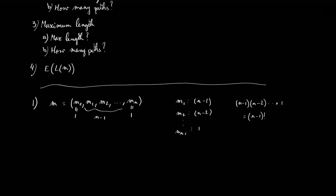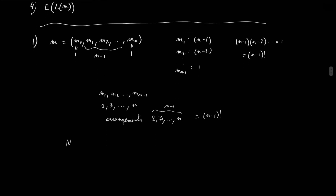Another way to think about it is that the houses m1, m2, etc., up to mn-1 must be the numbers 2, 3, etc., up to n — the number associated to each house. The number of different paths is the number of arrangements of the numbers 2, 3, etc., up to n. The number of arrangements of n-1 numbers is exactly equal to (n-1) factorial. So the answer to our first question is that the number of possible paths is exactly equal to (n-1) factorial.